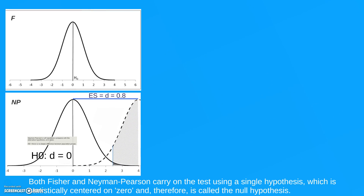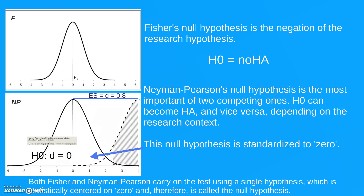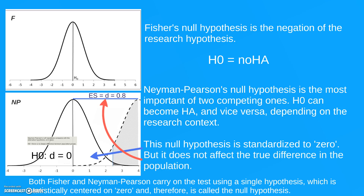Both Fisher's and Neyman-Pearson carry on the test using a single hypothesis which is statistically centered on zero, and therefore called the null hypothesis. For Fisher, the null hypothesis is the negation of the research hypothesis. But for Neyman-Pearson, the null hypothesis is a choice — the most important of those two competing hypotheses. So, what is today the null hypothesis may be the alternative hypothesis in another research context. This null hypothesis is standardized to zero statistically for statistical purposes, but it does not affect the true difference that exists in the population.